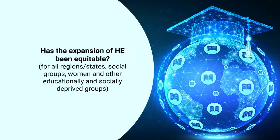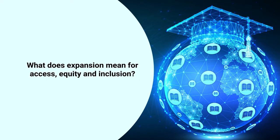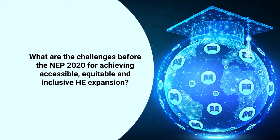But the questions we need to ask now are: has this expansion of higher education been equitable — equitable for all regions, states, social groups, women and other educationally and socially deprived groups? What does expansion mean for access, equity and inclusion? What are the challenges before the NEP 2020 for achieving accessible, equitable and inclusive higher education expansion?